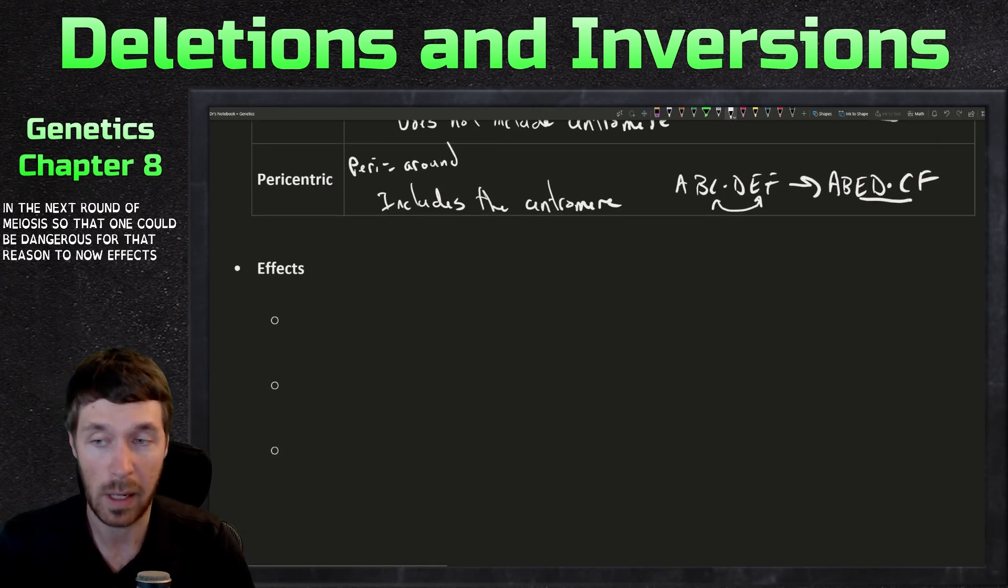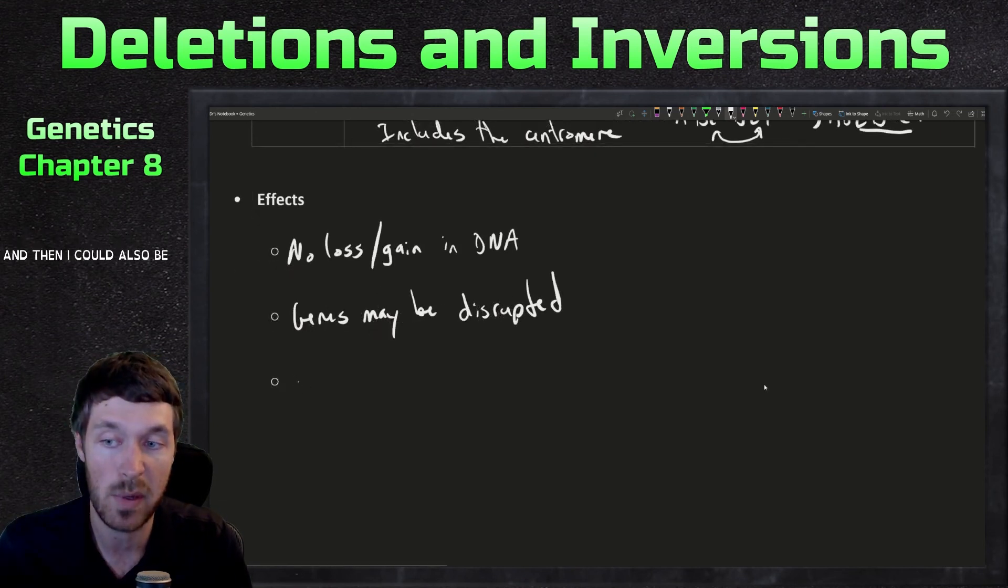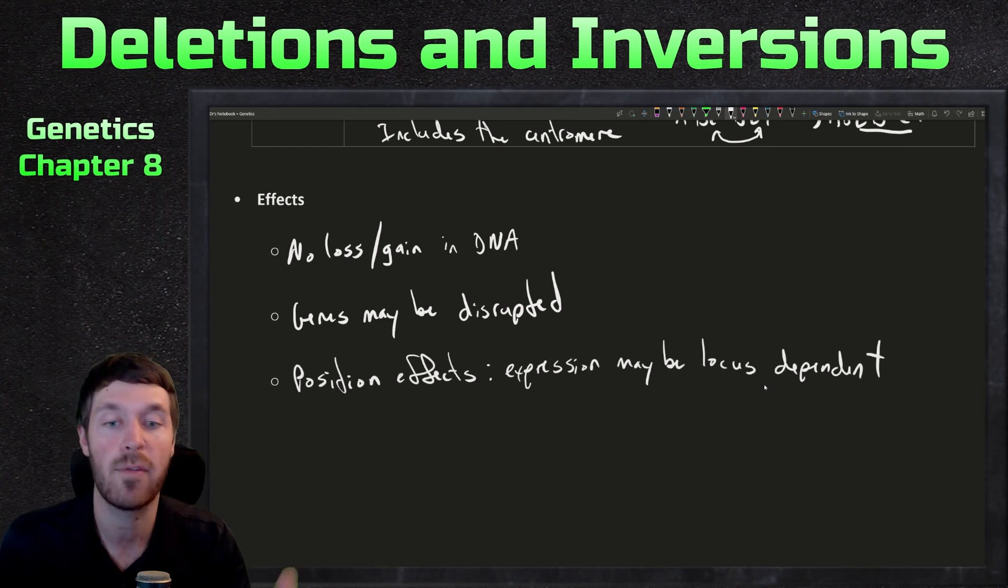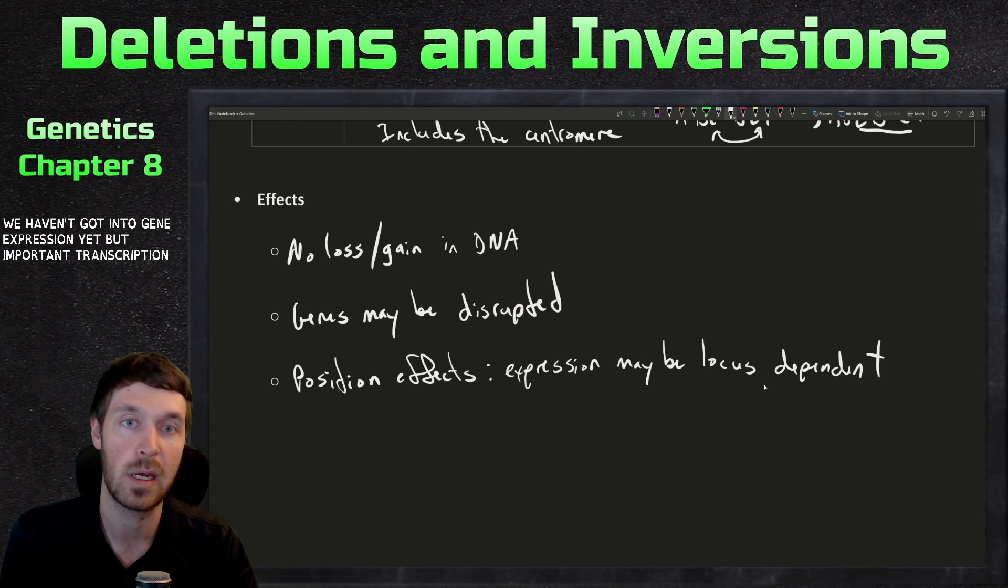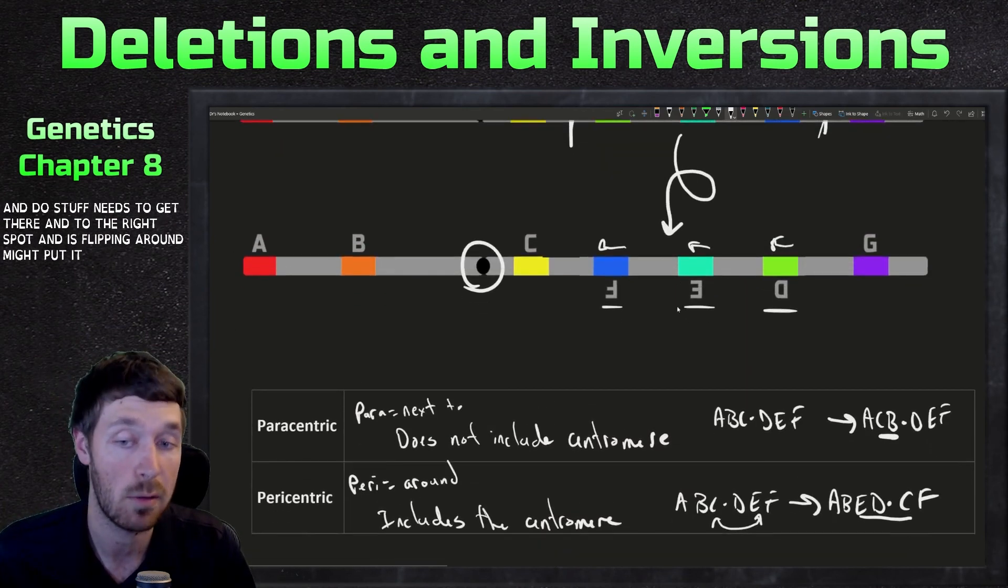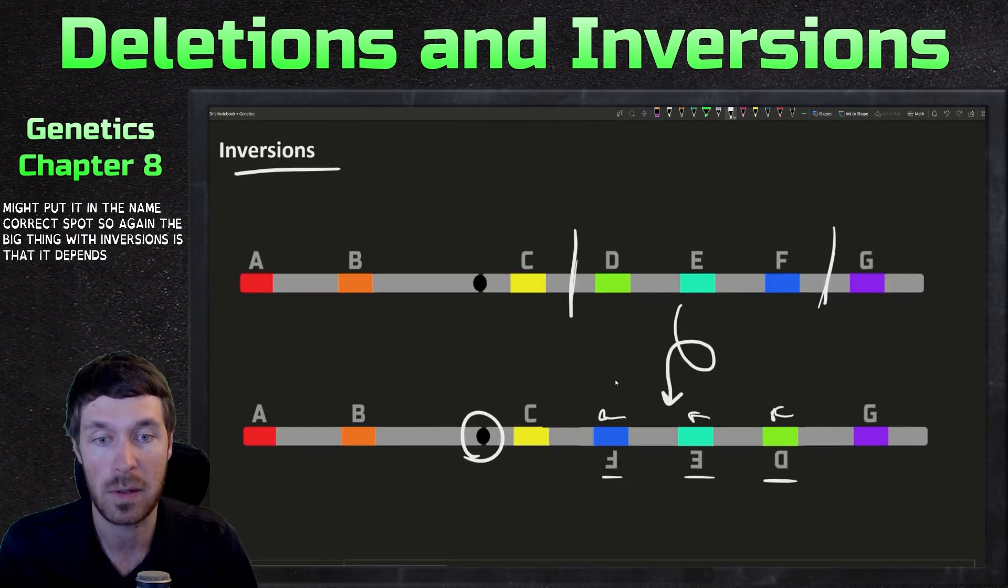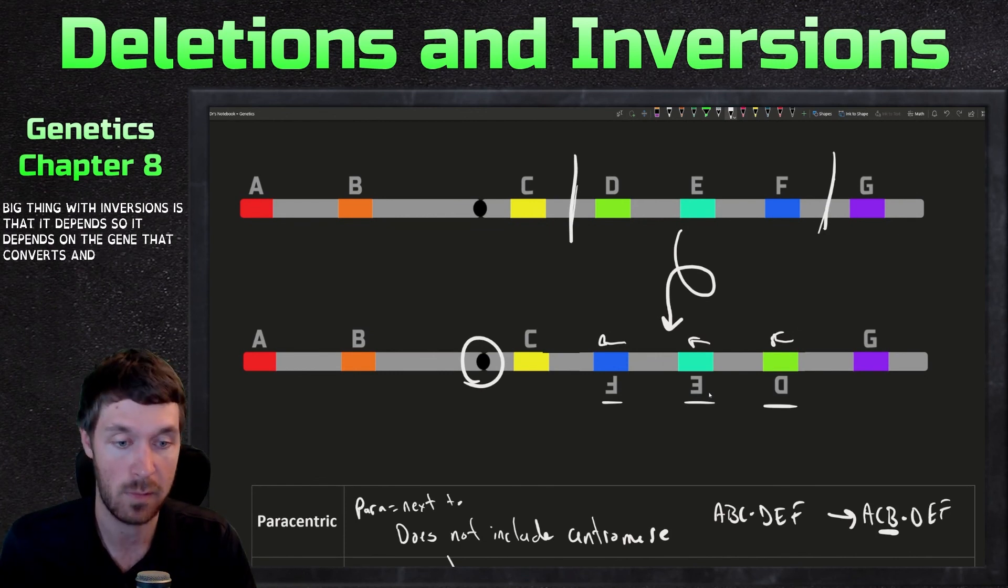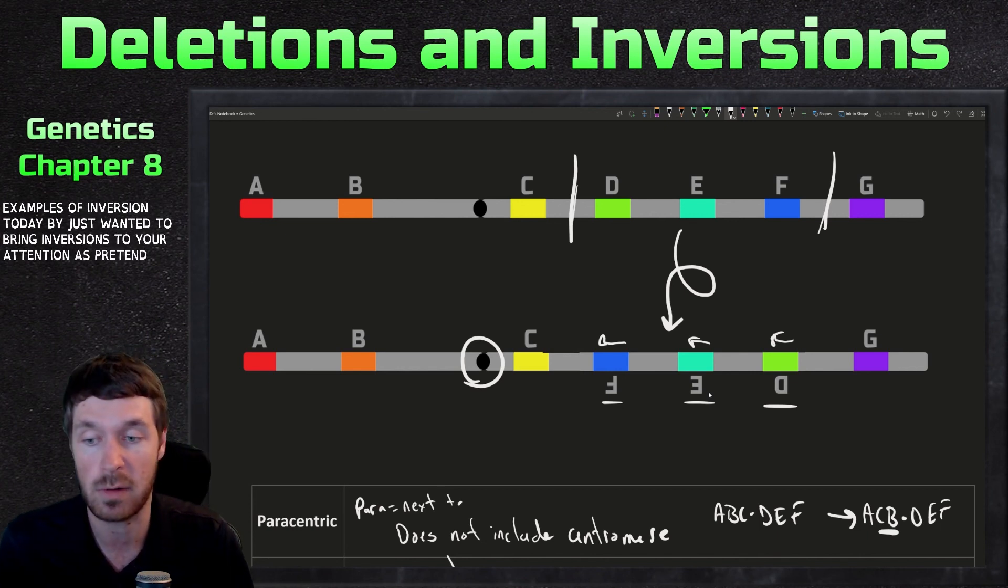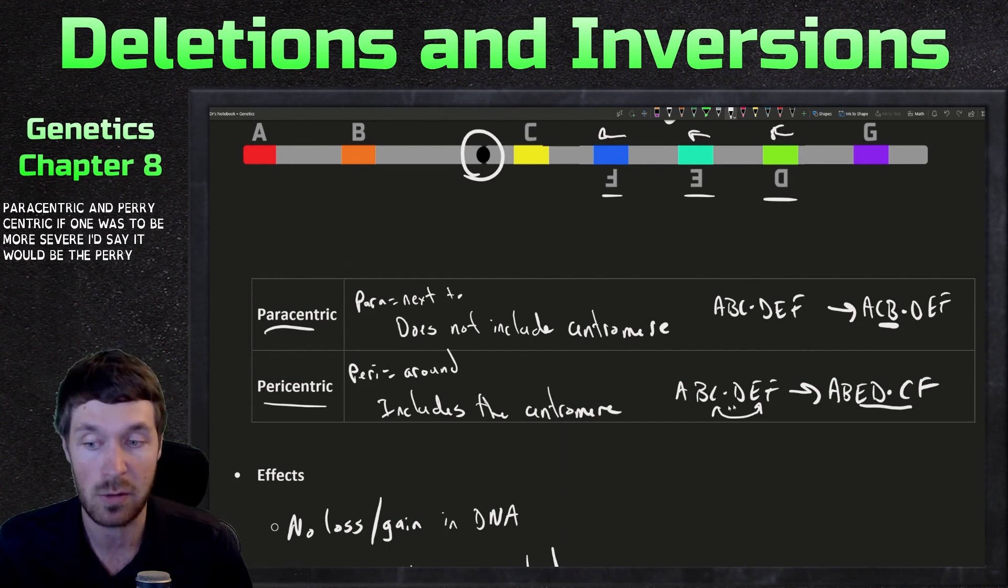Now effects here, again, no loss or gain in DNA. But because of this inversion, it may disrupt genes. And then that could also lead to some position effects. So the expression may then be locus dependent. So I know we haven't got into gene expression yet, but important transcription factors are needed for transcription activation. And so stuff needs to get there into the right spot. And this flipping around might put it in an incorrect spot. So the big thing with inversions is that it depends. So it depends on the gene that inverts and so forth. I don't have any direct examples of inversions today, but I just wanted to bring inversions to your attention as potential alterations in DNA, and then talk about the two different forms, paracentric and pericentric. If one was to be more severe, I'd say it would be the pericentric inversion.